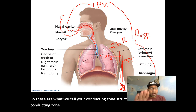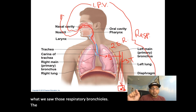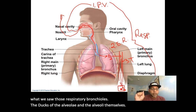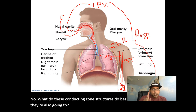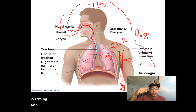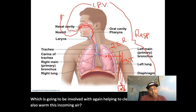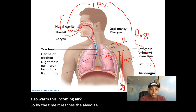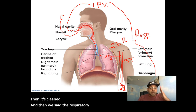The conducting zone includes all other respiratory passageways apart from the respiratory bronchioles, the ducts of the alveoli, and the alveoli themselves. Besides conducting air, these structures are also responsible for cleaning, humidifying, warming, and creating turbulence in the air. By the time air reaches the alveoli, the temperature has changed and it has been cleaned. The respiratory zone is the actual site of gas exchange.